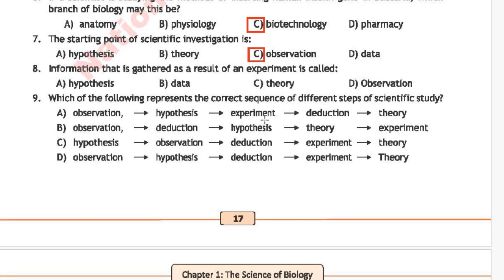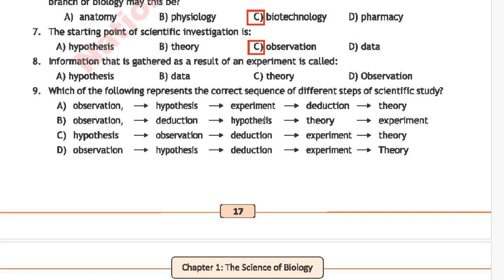MCQ number 8: information that is gathered as a result of an experiment is called — option A: hypothesis, option B: data, option C: theory, option D: observation. The correct answer is option B, data.